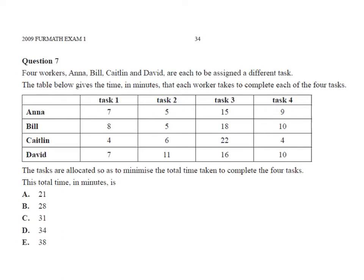Look at a second question now. This one here, you don't necessarily have to go through and work out the Hungarian algorithm to answer this question. However, I am going to go through an example of how to do it, just to make sure everyone understands the process. Here we've got four workers, Anna, Bill, Caitlin, David, and they're each assigned to a different task. The table below gives the time in minutes that each worker takes to complete each of the four tasks. Tasks are allocated to the minimum total time taken to complete the four tasks. Therefore, the total time is... We need to set up our initial matrix and then we can work our way through our Hungarian algorithm.